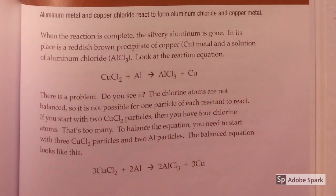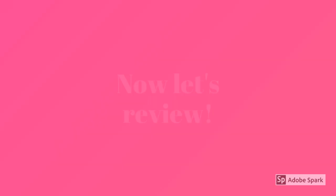There is a problem — the chlorine atoms are not balanced, so it is not possible for one particle of each reactant to react. If you start with two CuCl₂ particles, you have four chlorine atoms — that's too many. To balance the equation, you need to start with three CuCl₂ particles and two Al particles. The balanced equation looks like this.